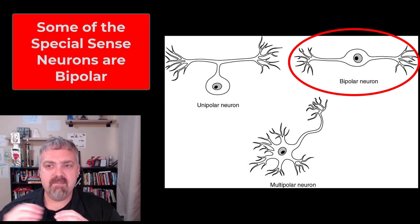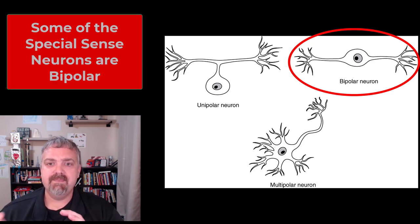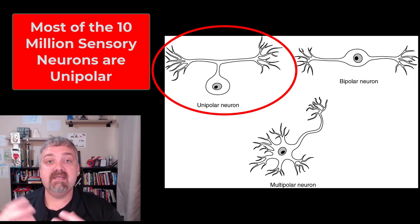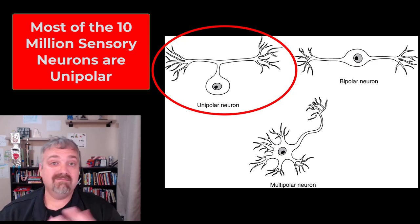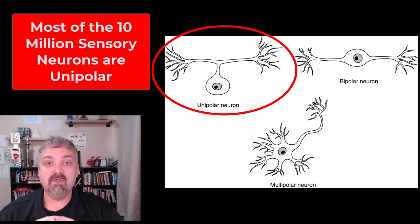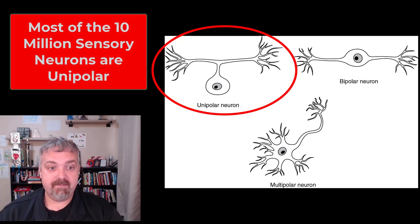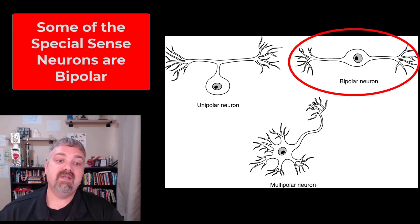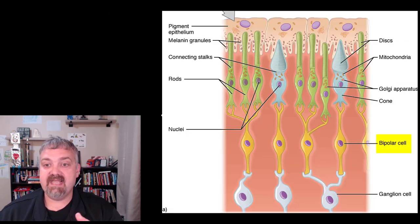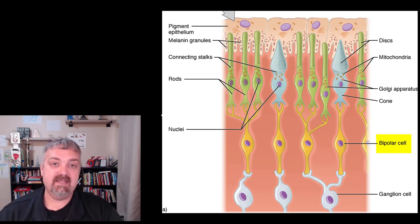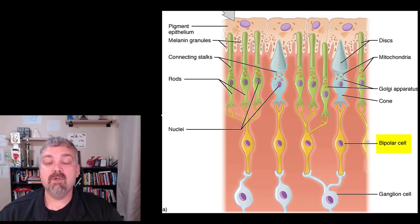Notice the bipolar neuron — that cell body is right in the middle, and then you have the two poles, one on each side. Unipolar neurons are going to be your basic sensory neurons; we have about 10 million sensory neurons and the huge majority of them are unipolar, used by the sensory or afferent divisions of your peripheral nervous system. Bipolar neurons are going to be for some of your special sense neurons. Here we have the bipolar cells — those are the bipolar neurons — this would be in your eyes. So some of your special senses use bipolar neurons, but the most important sensory neurons are unipolar.